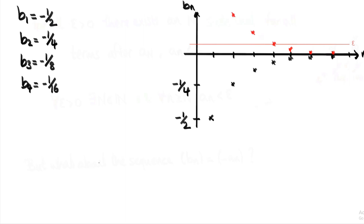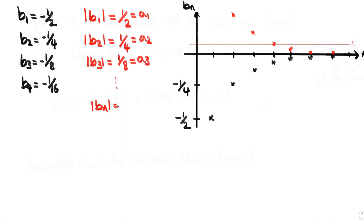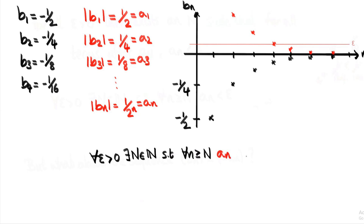How do we do it mathematically? We use the modulus function. The modulus does exactly what we want: it takes every negative number and turns it into a positive number, and leaves positive numbers the same. So the modulus of b₁ is a half and the modulus of b₂ is a quarter, and the modulus of bₙ is just going to be equal to aₙ. We can use this equality to modify our definition of convergence — where we once had aₙ, we replace it with the modulus of bₙ. This updated definition of convergence now works for sequences that have negative terms. And we can finally say that if this condition is satisfied, then our sequence bₙ converges to zero.